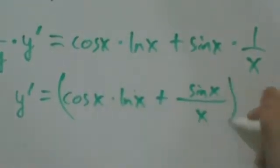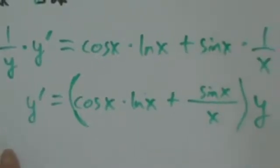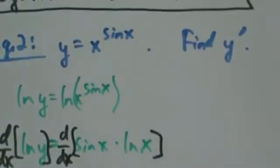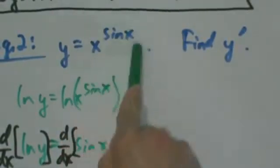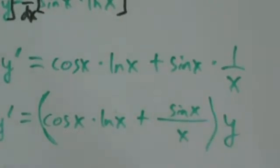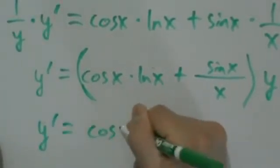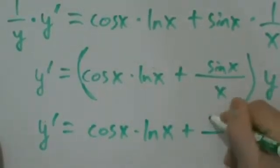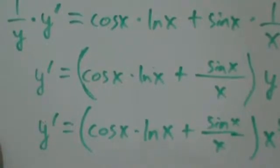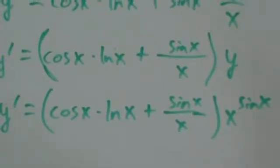So y prime equals cosine x times natural log of x plus sine of x over x, all multiplied by y. We're not done yet — the last step is to go back to the beginning and substitute. Since y equals x to the sine of x, we replace y with that. So y prime equals cosine of x times natural log of x plus sine of x over x, all times x to the sine of x.